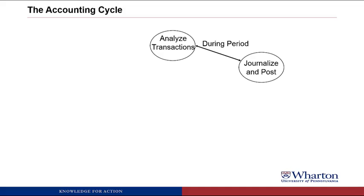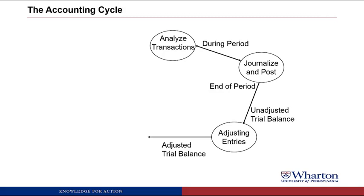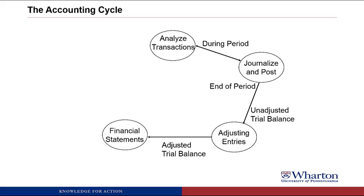First, as the business is operating during a fiscal period, transactions happen and then you have to analyze those transactions to figure out how to come up with journal entries, and then post those journal entries to T-accounts. Once the period is over, we do an unadjusted trial balance to make sure we haven't made any math mistakes or transposed any numbers. Then we do adjusting entries, which are needed to get the books correct before we do financial statements. After another trial balance, we prepare the financial statements. When we're done with those, we have to do closing entries, which gets us all set to start the new period, so that we can do this over and over again through the whole life of the business.